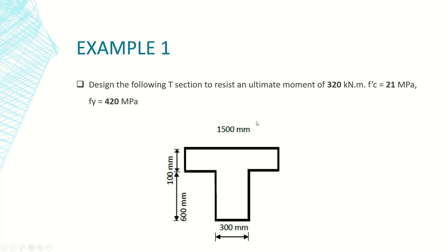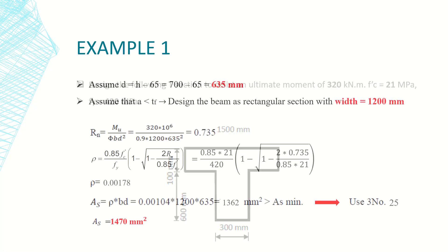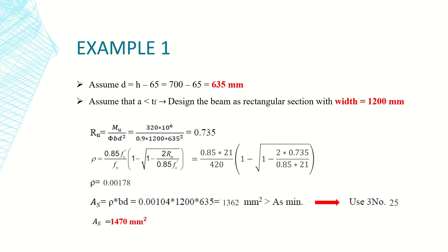These are the dimensions of the T section. As a first step we usually make some assumptions to be checked later at the end of the problem. First of all I will assume that d, which is the effective depth...